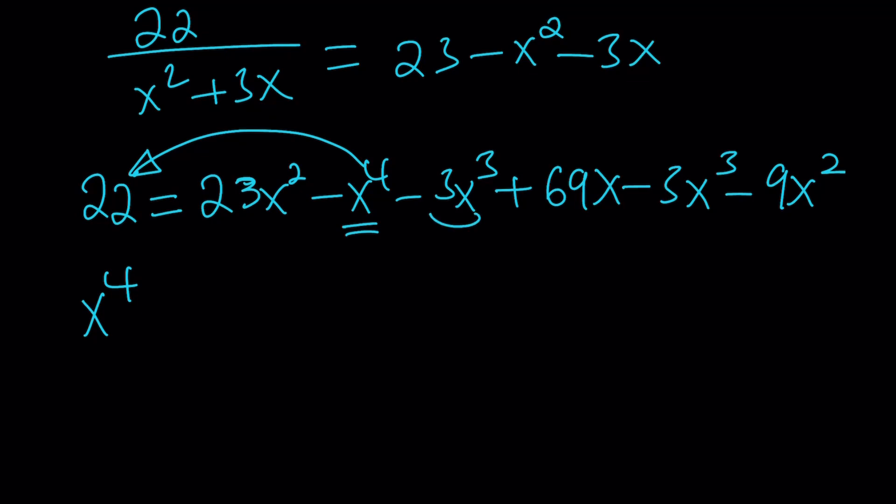Let's put everything on the left hand side so that x to the fourth becomes positive. So we have x to the fourth, and then negative 3x cubed and negative 3x cubed makes negative 6x cubed, but on the left hand side that's going to be positive 6x cubed. Then I have 23 minus 9 is 14, but that's going to be negative 14x squared on the left hand side. And then finally we have the 69x which becomes negative 69x. And of course, we have our constant 22, which is just going to stay there.